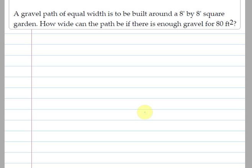A gravel path of equal width is to be built around an 8 foot by 8 foot square garden. How wide can the path be if there's enough gravel for 80 square feet?